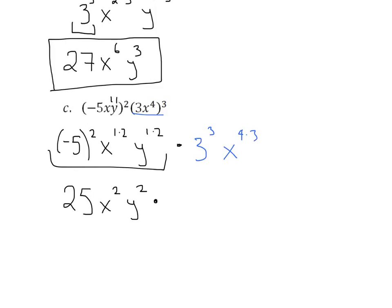And then times... Again, I'll just do this in black now. 3 to the 3rd is going to be 27. And then we're going to get x to the 4 times 3 is x to the 12th.